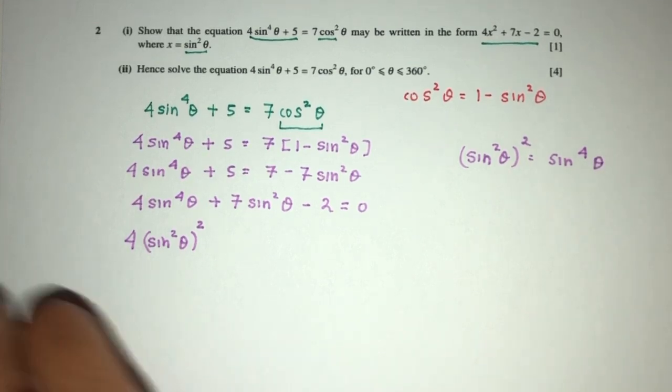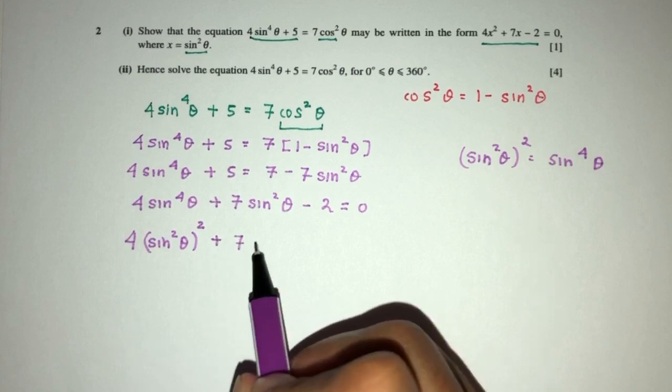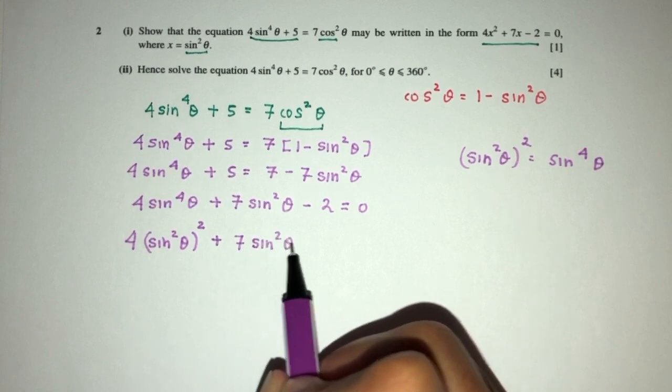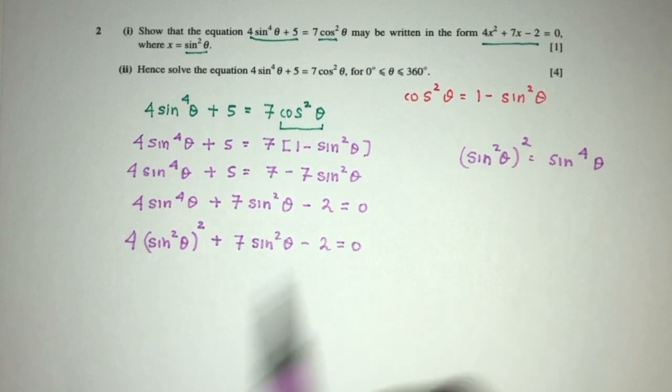Now, next one will be the same, obviously, plus 7sin²θ minus 2 is 0.